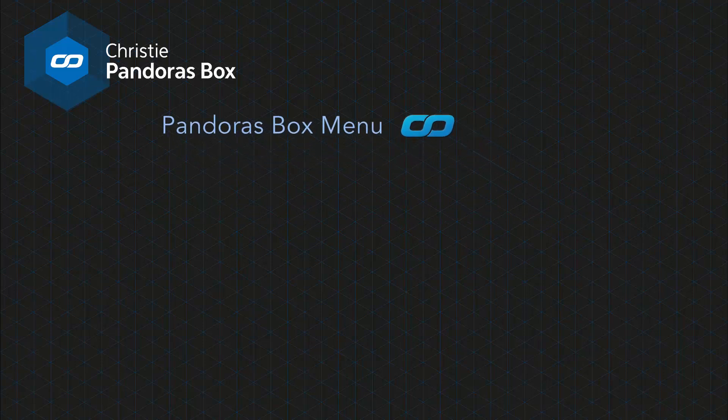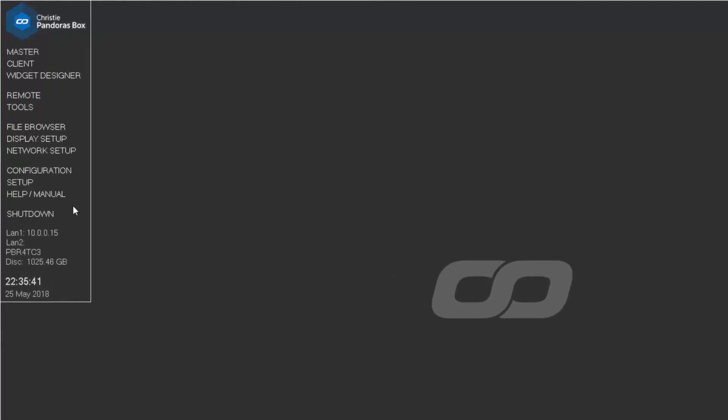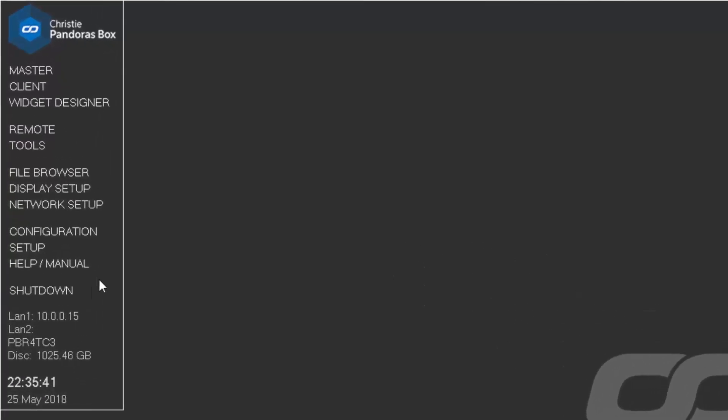The Pandora's Box menu is pre-installed on all Pandora's Box hardware — servers, players, compact players, and player hardware with the zero-output option. It is a menu that starts automatically after booting and covers the Windows desktop. This application is very useful as it gives access to the most needed actions: with only one click, you can start Pandora's Box as master or client, change IP addresses, or open Windows Explorer. It can also communicate between other computers that have the Pandora's Box menu installed and are in the same network range.